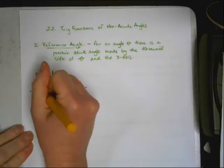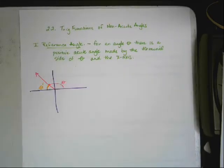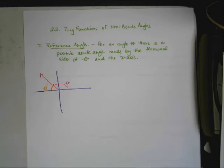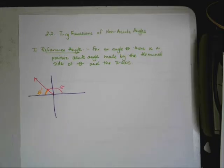That acute angle is our reference angle. So there's one in quadrant 2. So this will be when theta is in quadrant 2. It looks kind of like that.